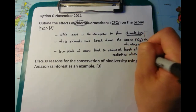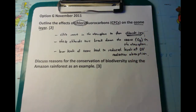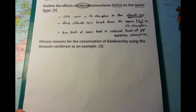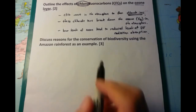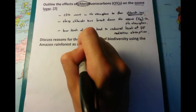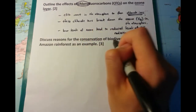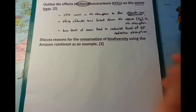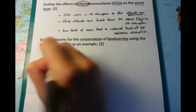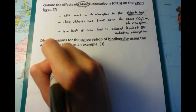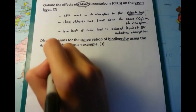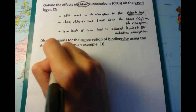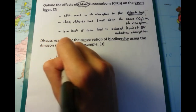The second question is an interesting question: Discuss reasons for the conservation of biodiversity using the Amazon rainforest as an example. It's a three-mark question, so we want to write at least three points — I'm going to give you four here today.